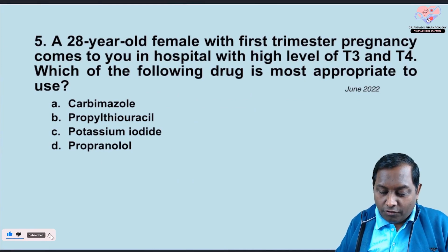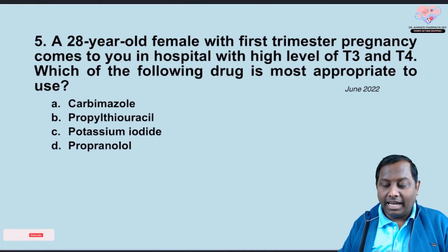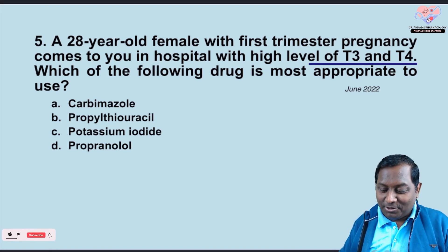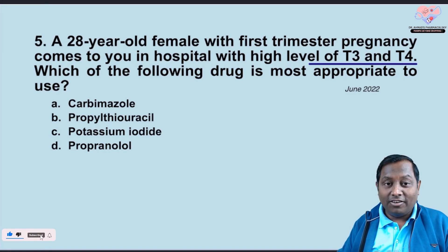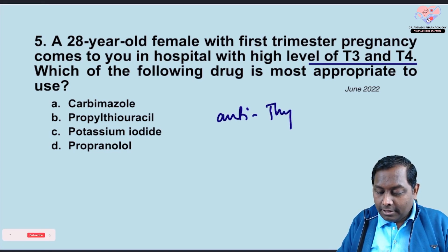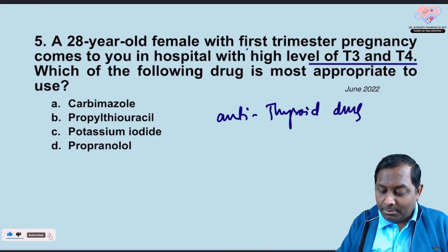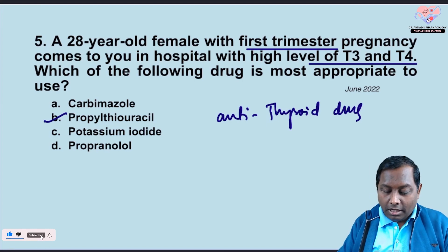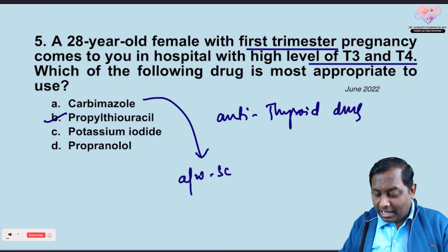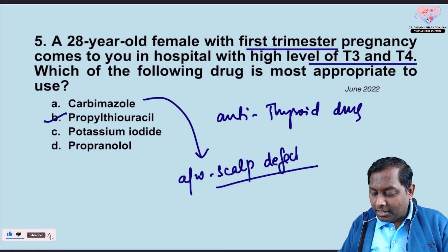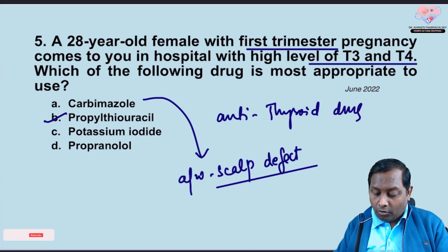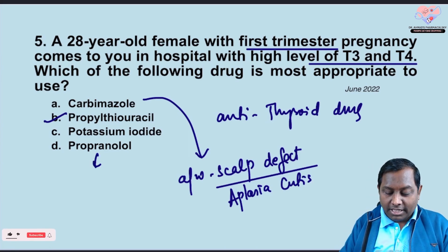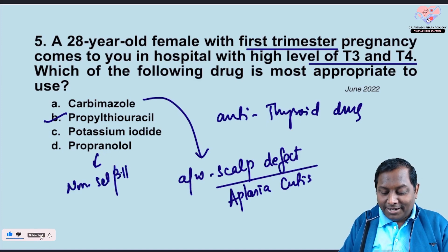Question five: a 28-year-old female in her first trimester of pregnancy presents with high T3 and T4 levels. Which drug is most appropriate for hyperthyroidism? We use an antithyroid drug. In the first trimester, propylthiouracil (PTU) is safest. Carbimazole and methimazole are associated with aplasia cutis — a scalp defect — so they are avoided. Potassium iodide is not most appropriate. Propranolol, a non-selective beta blocker, is contraindicated.